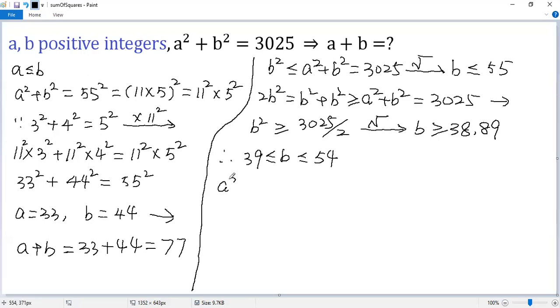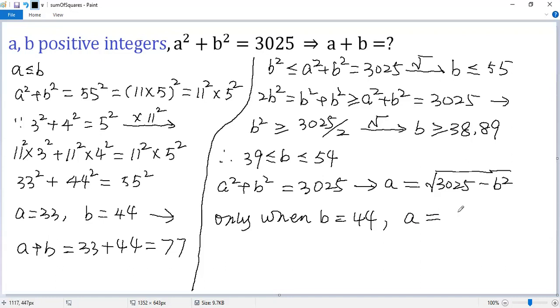Now a squared plus b squared equals 3025. We can solve a. So a equals square root of 3025 minus b squared. Now we can plug in the value of b one by one: 39, 40, 41 up to 54. It turns out only when b equals 44, we get the integer value for a. So a equals 33.